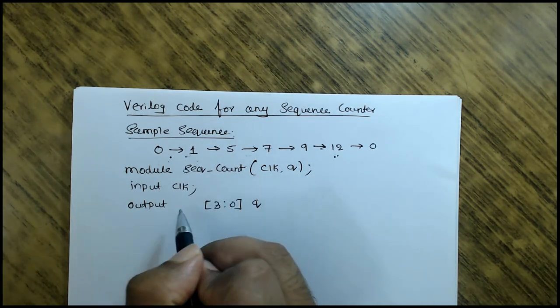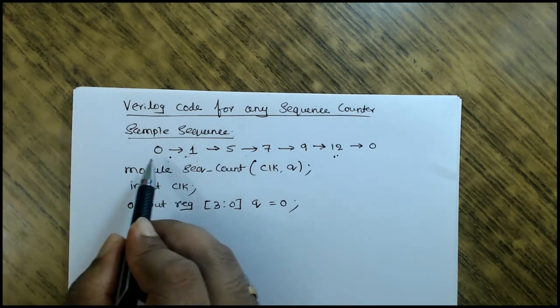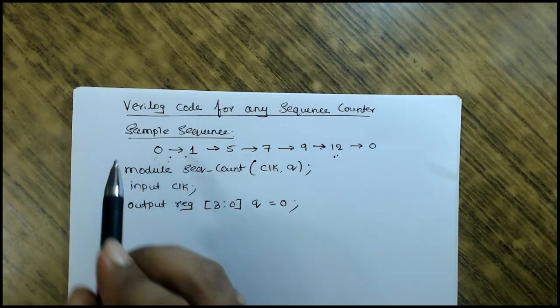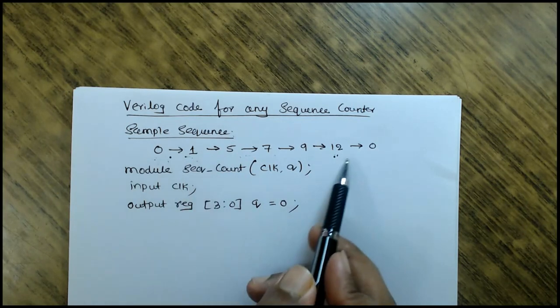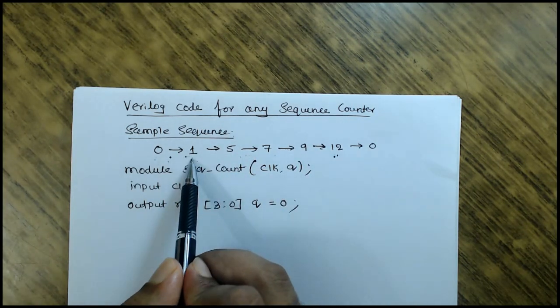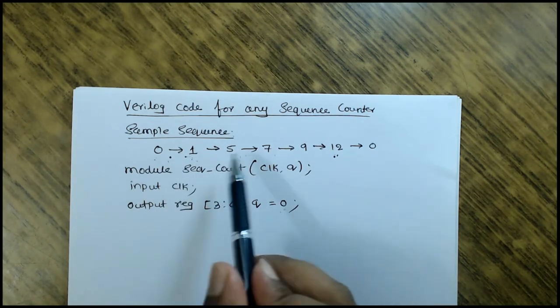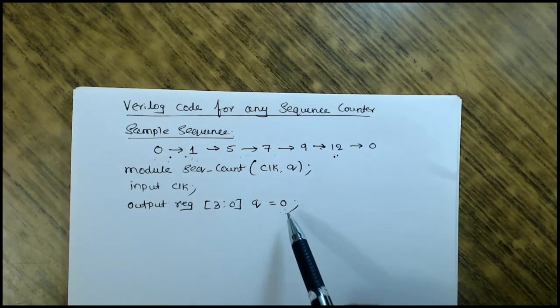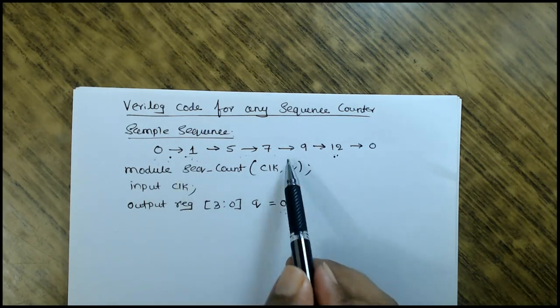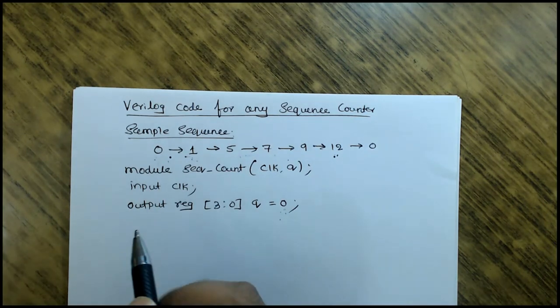As I'm using Q in always statement, I should declare it as reg. So Q I'll initialize it to 0, because the first state of sequence is 0. If the first state - if 0 is not at all present - think that if 1, 5, 7, 9, 12 is a sequence, then you should initialize it as 1 itself. It's not mandatory that all the time you should declare it as 0. If 0 is not appearing in your sequence, then you cannot have the initialization as 0, because it will not go increment from that point.